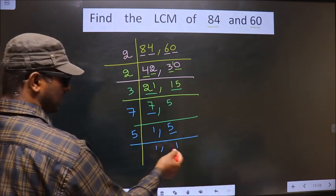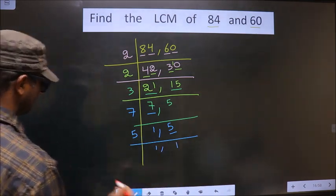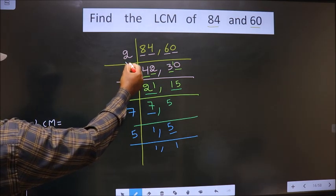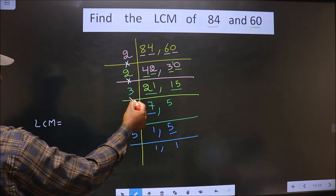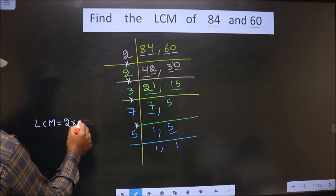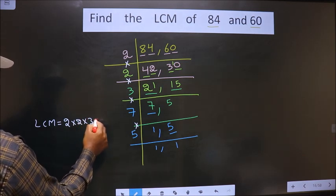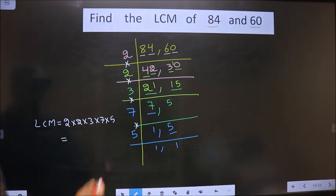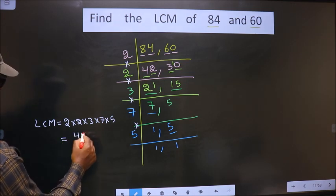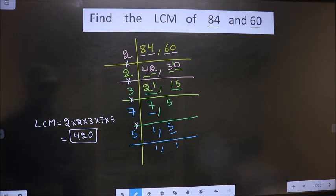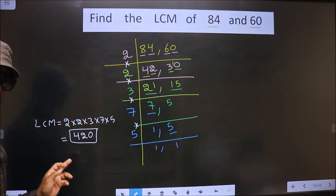Now, we got 1 in both the places. So now our LCM is the product of all these numbers. That is, 2 into 2 into 3 into 7 into 5. You multiply all these, you get 420. This is our answer. Am I clear?